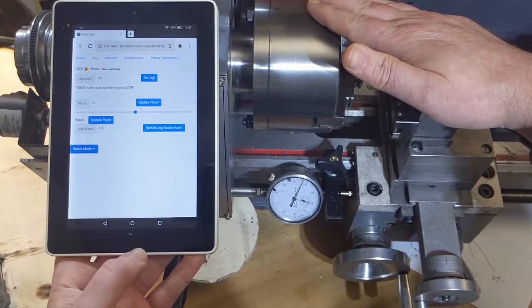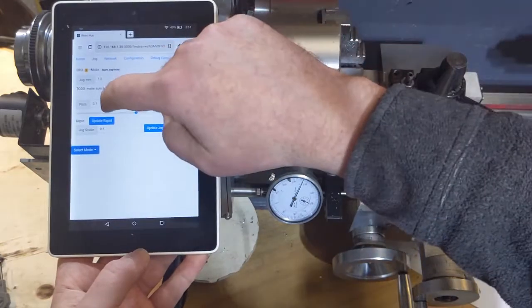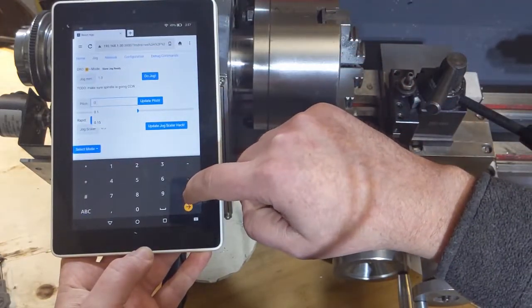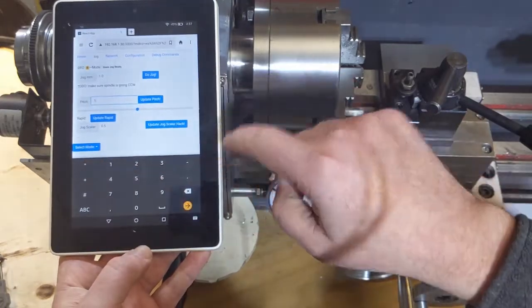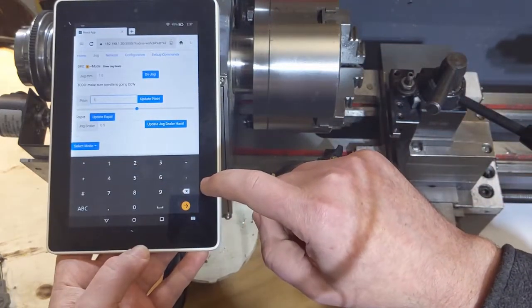But here's the mode and what we'll do is we'll change the pitch to one millimeter per revolution. I'm gonna hand turn the spindle just so there's not a noise issue.